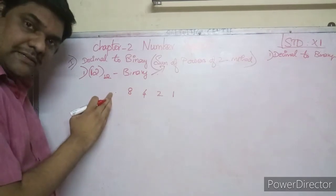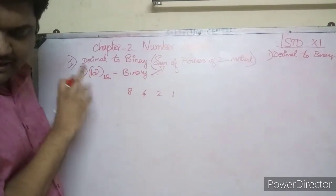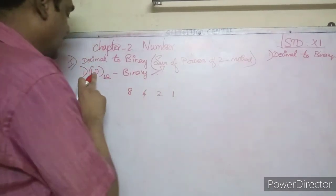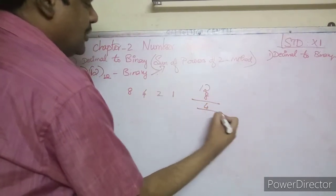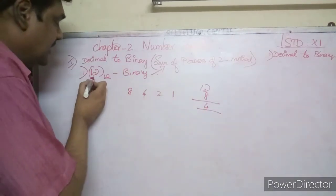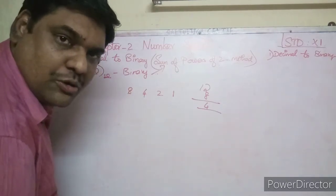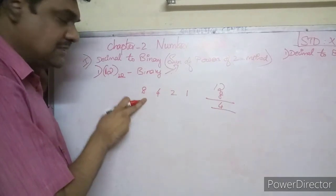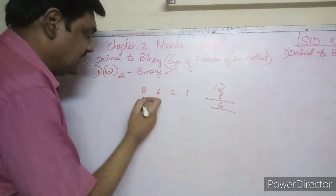Now we compare from the right side. Compare 12 and 8: 12 is greater than 8, so we put a 1 there. Then we swap — that is, subtract 8 from 12, which gives us 4.